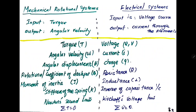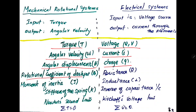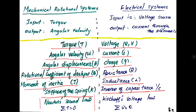When considering the terms: in the mechanical rotational system, torque is equivalent to voltage, angular velocity is equivalent to current, angular displacement is equivalent to charge, rotational friction coefficient of dashpot is resistance R, moment of inertia J is equivalent to inductance, and stiffness of the spring is the inverse of capacitance, 1 by C. Newton's second law — sum of applied torques equals zero — maps to Kirchhoff's voltage law — sum of voltages in the circuit equals zero.